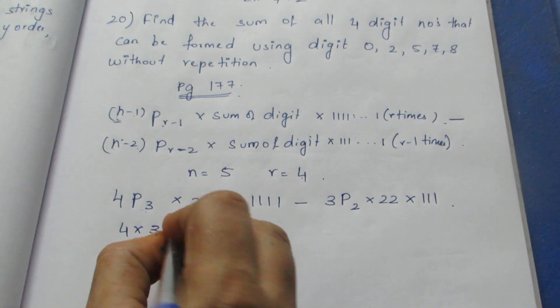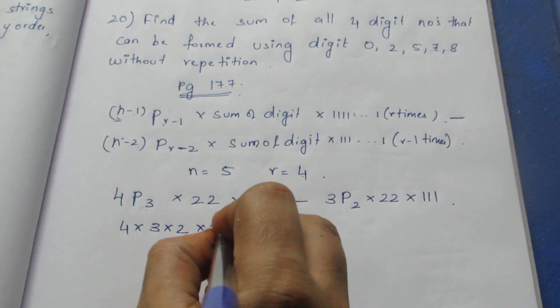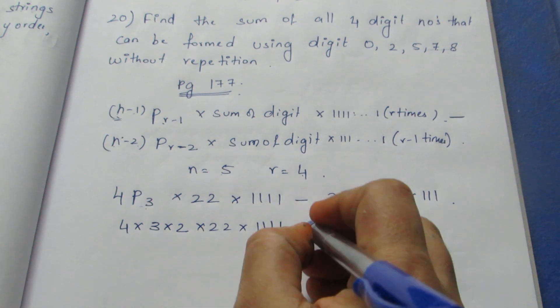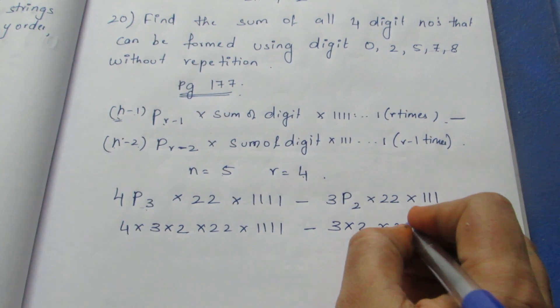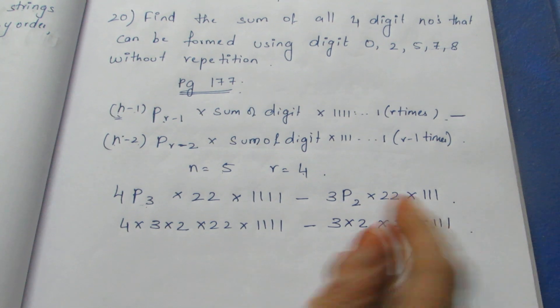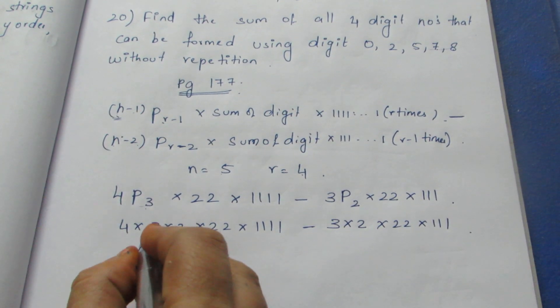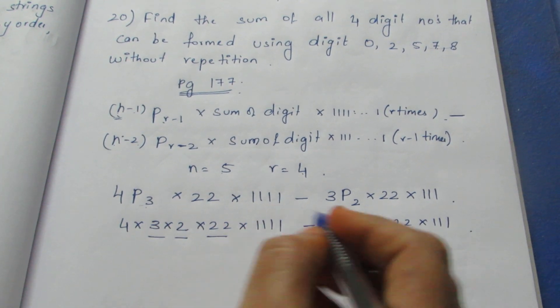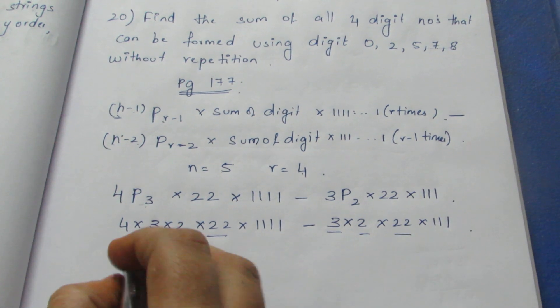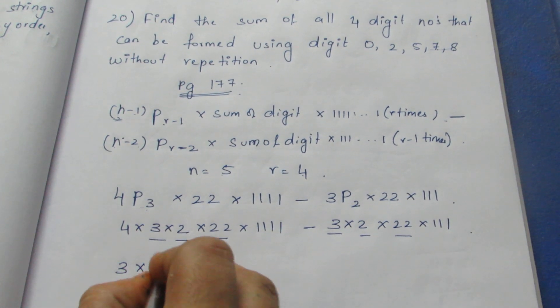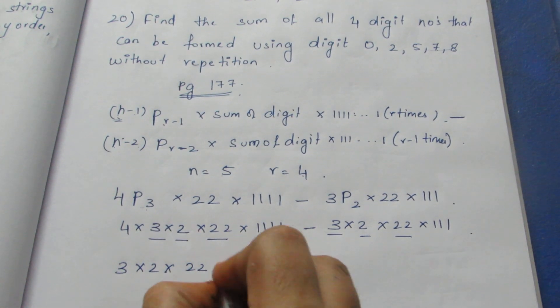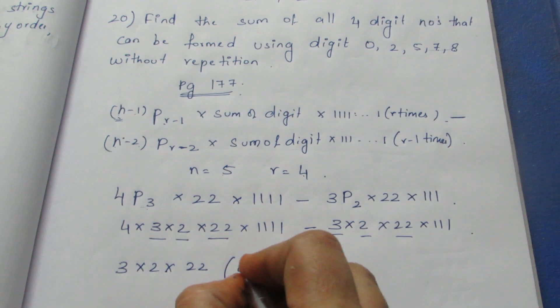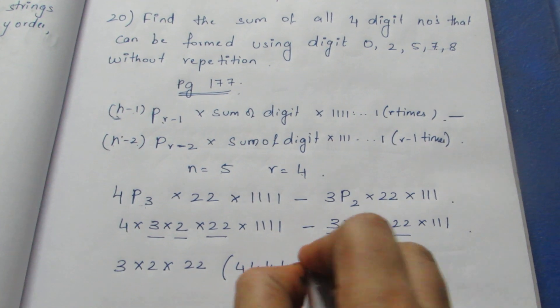4P3 is 4 times 3 times 2, which is 24, into 22 into 1111 minus 3 into 2 into 22 into 111. Take out common factors: 12 times 22 into 2 - bring out 3 as common.